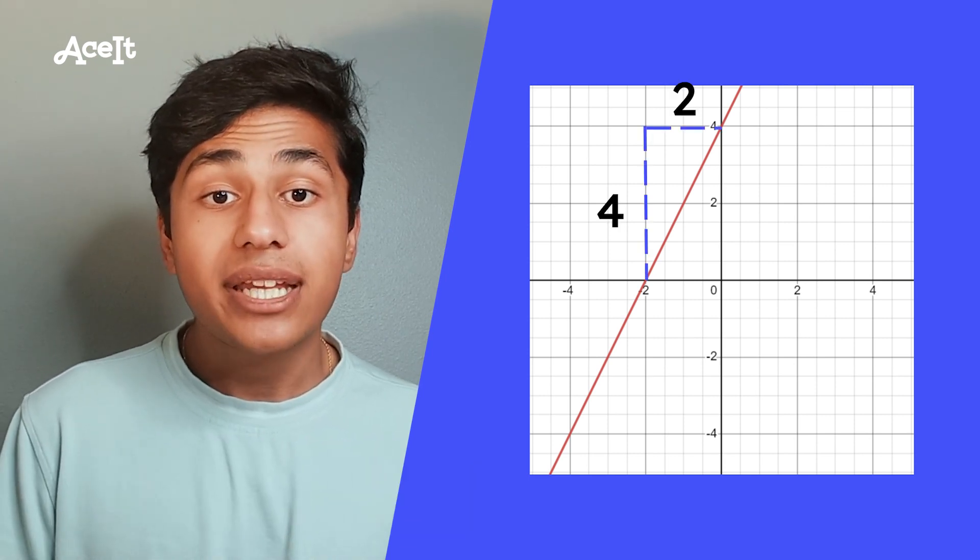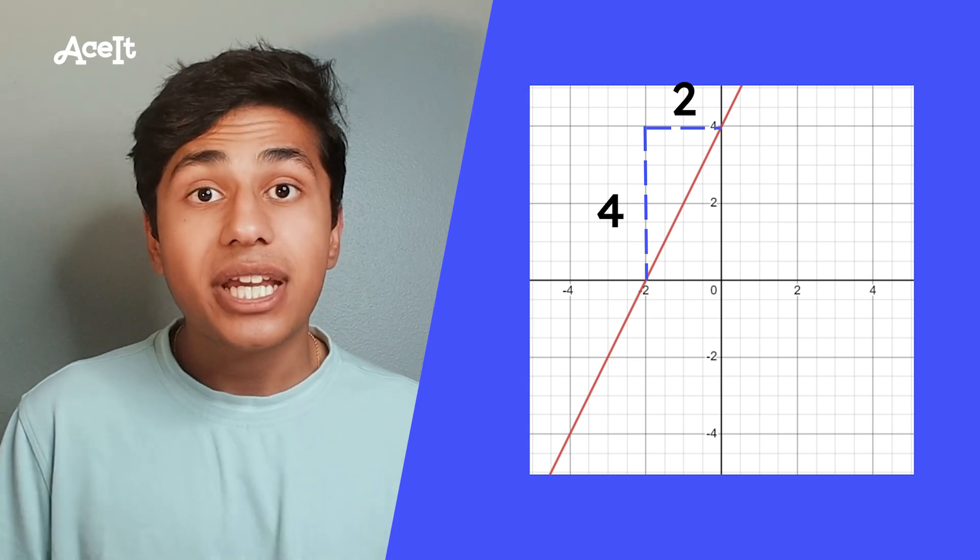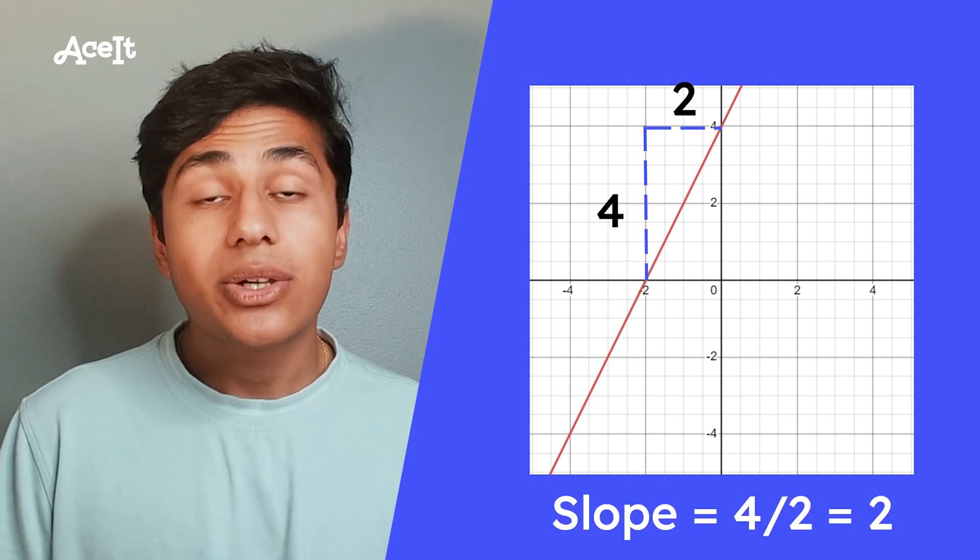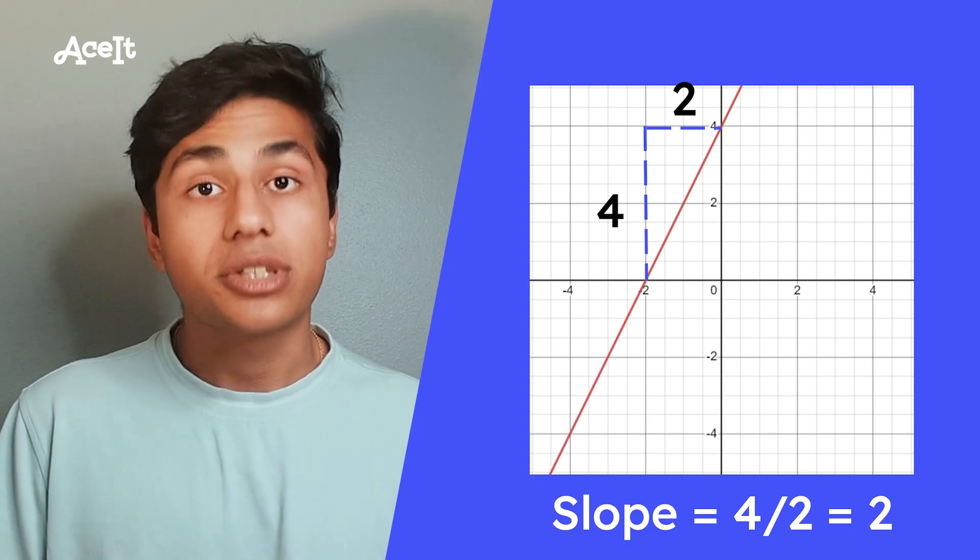If we look at the change in the y points, we see it's 4, and the change in x is 2. So in this case, the slope would be 4 over 2, or 2.